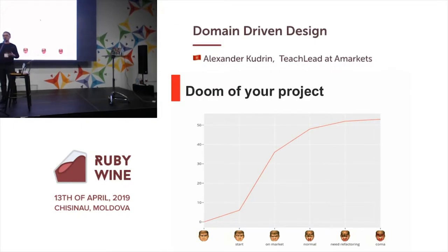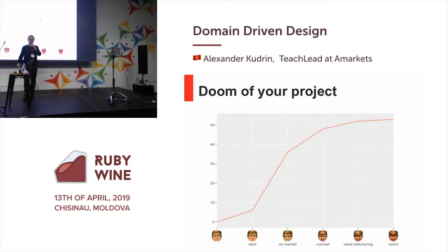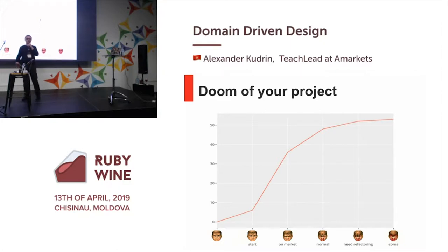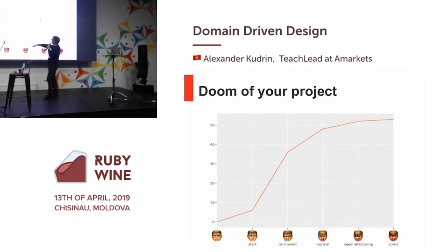The timeline is split into five parts. The first one is the start of your product — the time when you share your idea, talk about it, and realize the first version of your application, like a minimum viable product or MVP. The second part is when your product went to market, your product is good, growing, and you work really productively.